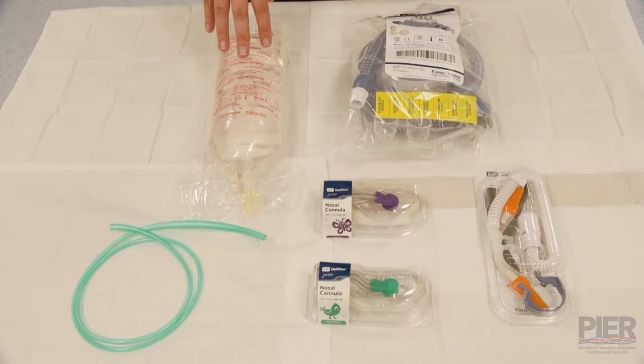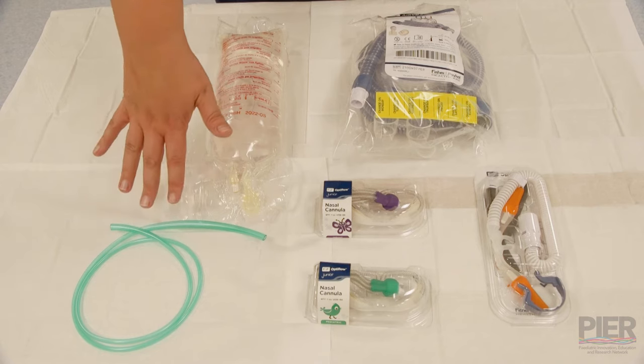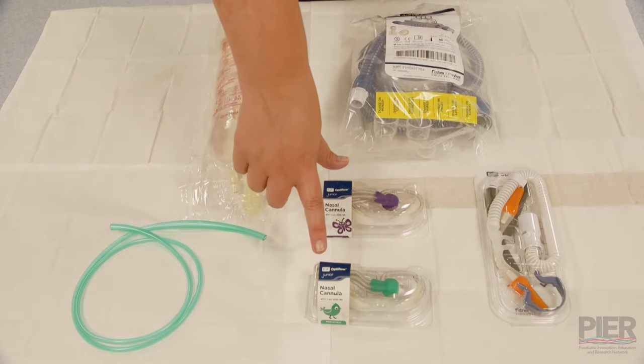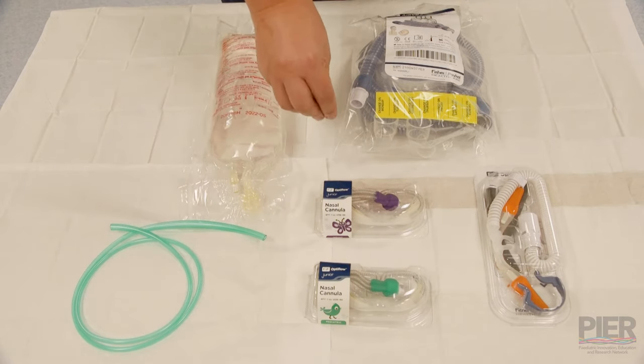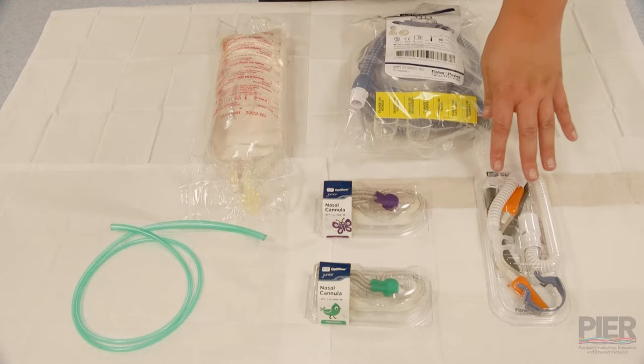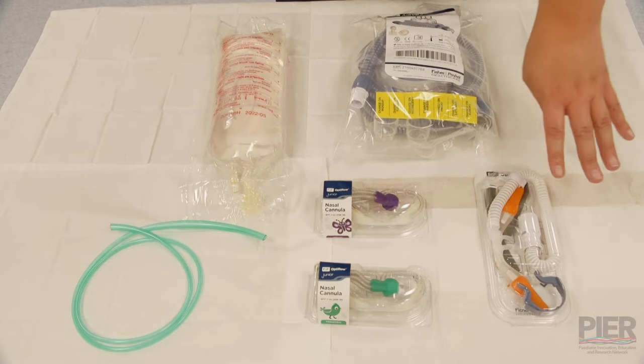We've got the Airvo circuit, the water for humidification, some green oxygen tubing, two sets of junior prongs, bearing in mind that the yellow prongs aren't suitable for use on Airvo, and then there are adult prongs. These come in small, medium and large.